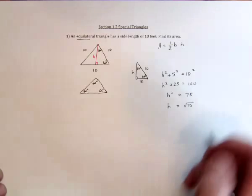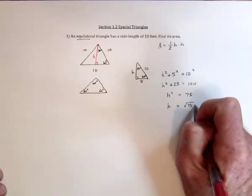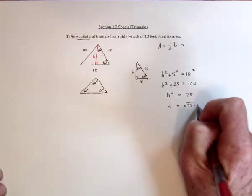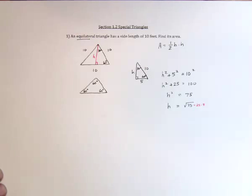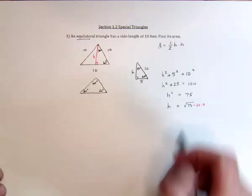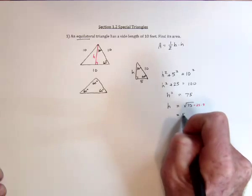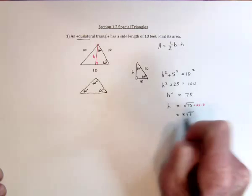And then to simplify the square root of 75, 75 can be written as 25 times 3. So we can take the square root of 25, which is 5, and leave the square root of 3, which is irrational.